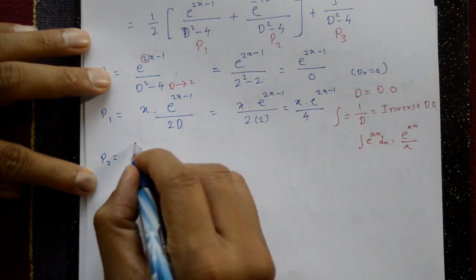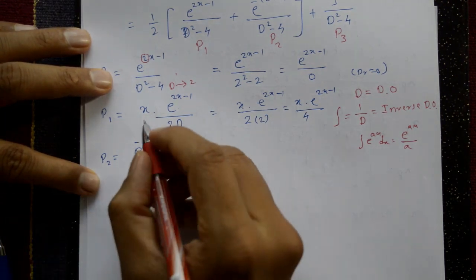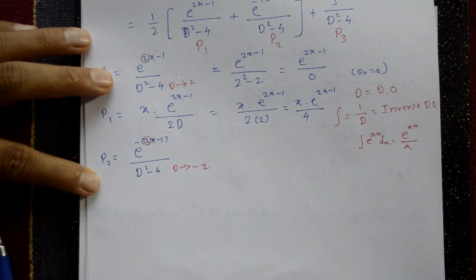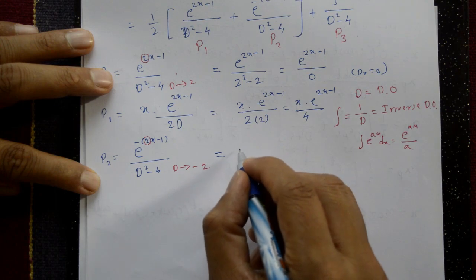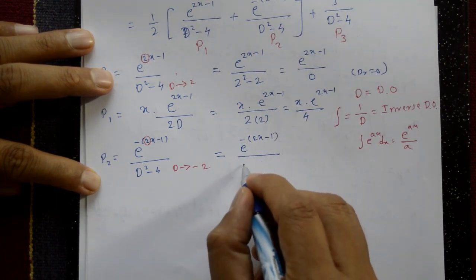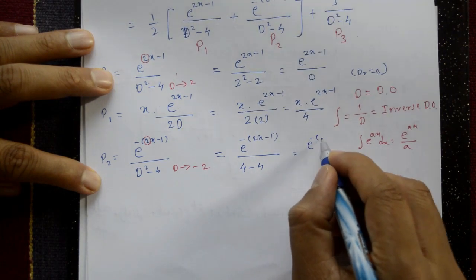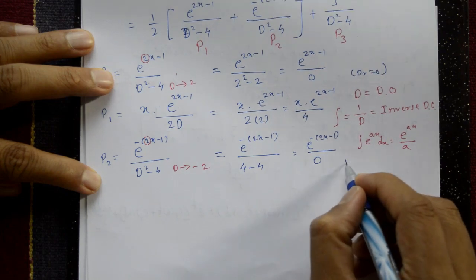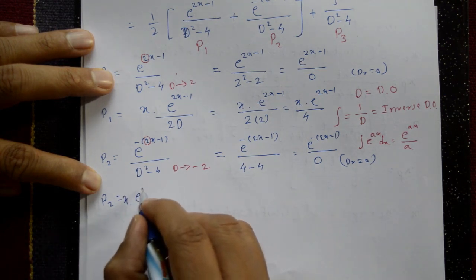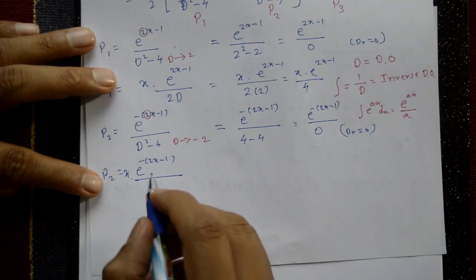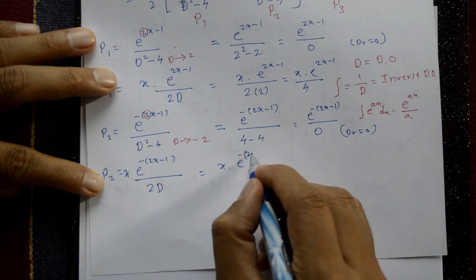P2: For e^(-(2x-1))/(D²-4), substitute D = -2: denominator = (-2)² - 4 = 4 - 4 = 0. Again denominator is zero, so multiply by x and differentiate f(D) = 2D: P2 = x·e^(-(2x-1))/(2D). Integrating gives P2 = -x·e^(-(2x-1))/4.